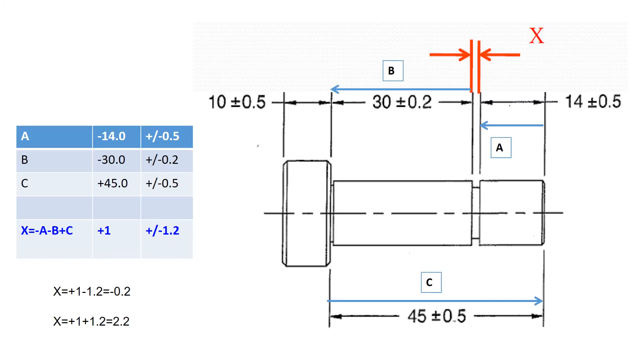For example, here A, B, C are three dimensions that impact X, whether there will be a gap or interference. In this example, A and B are in the negative direction from the stack path, and C is in the positive direction.